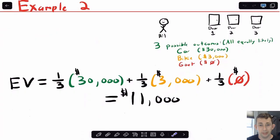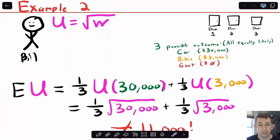This is not expected utility. The way you can tell it's not expected utility is we haven't yet given Bill a utility function, so that's what I'm going to do now. Just for fun, I'll say that Bill is risk averse, and the prize that he gets for any given outcome is W. Bill's utility is the square root of W.